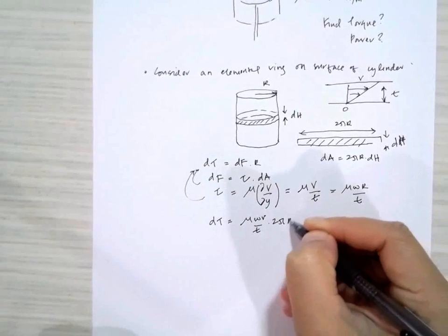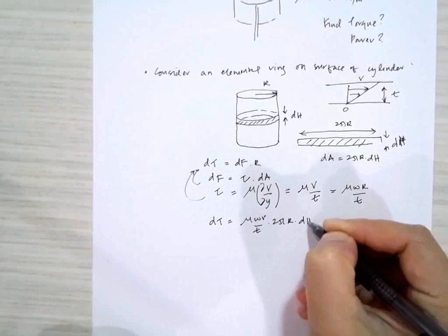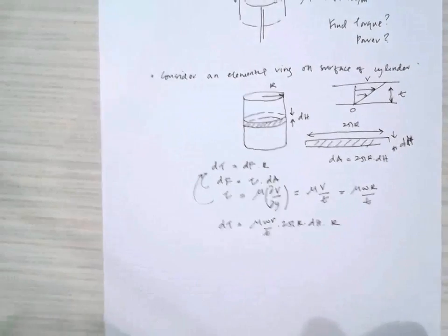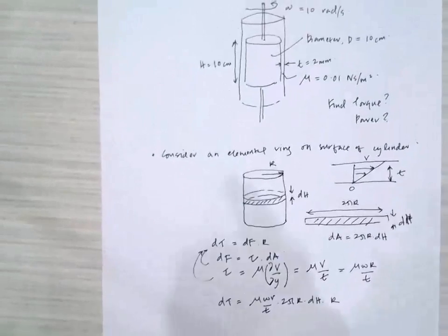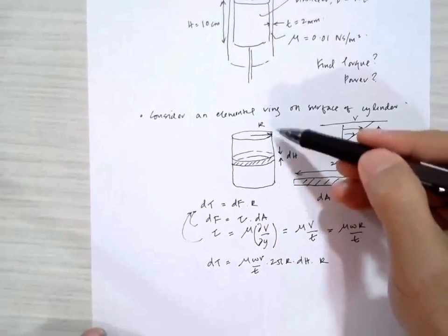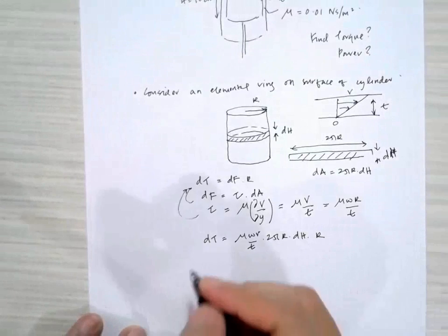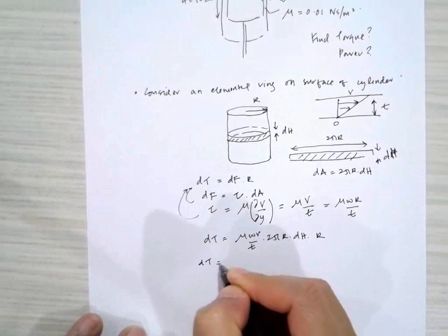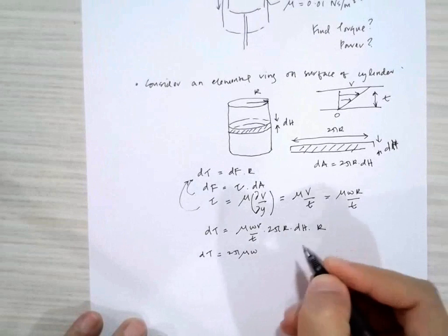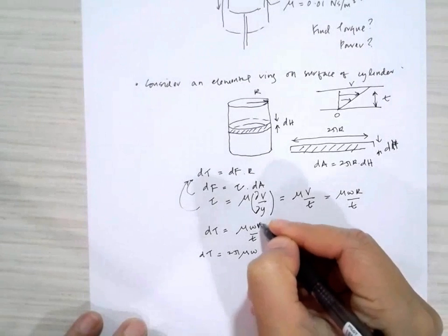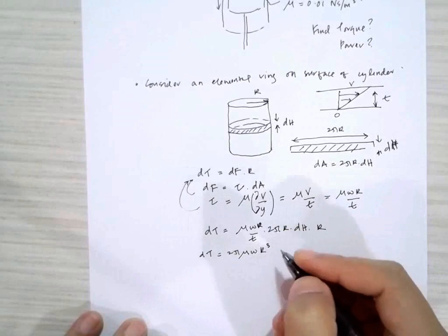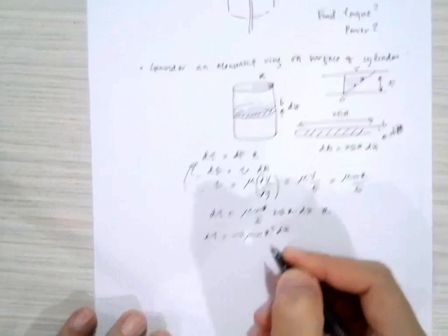To calculate the total torque, we integrate over the whole height of the cylinder. Rearranging gives 2π μω r³ dh divided by t.